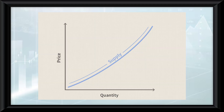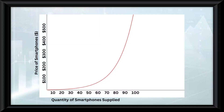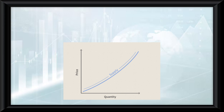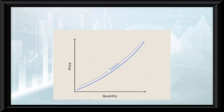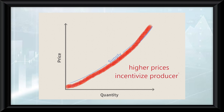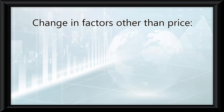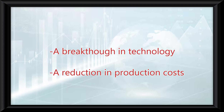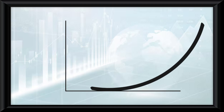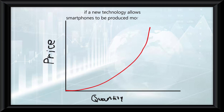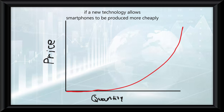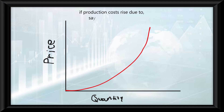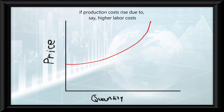On the graph, as the price increases, we see a movement along the supply curve, meaning suppliers are willing to produce and sell more. For example, if the price of a smartphone rises from $300 to $500, companies will likely increase production because they can make more profit. The market supply curve is the sum of all individual suppliers in the market, and is upward sloping because higher prices incentivize producers to supply more. But if there's a change in factors other than price — like a breakthrough in technology or a reduction in production costs — these changes shift the entire supply curve. If a new technology allows smartphones to be produced more cheaply, the supply curve will shift to the right. Conversely, if production costs rise due to high labor costs, the supply curve will shift to the left.